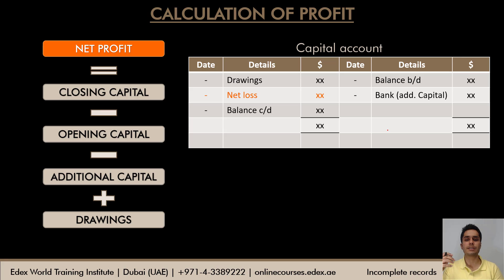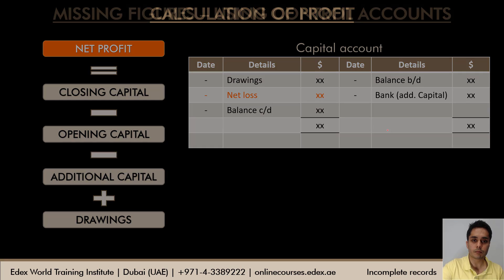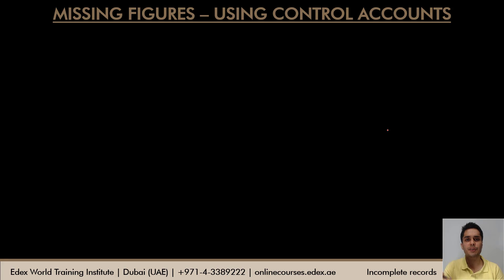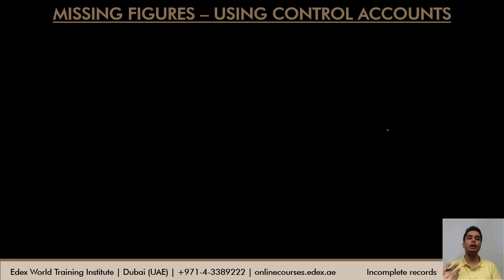Apart from calculating profit using opening and closing capital, if a proprietor maintaining incomplete records also wants to prepare an income statement to calculate gross profit and net profit, they need sales, purchases, and inventory details. If we can arrive at the sales and purchases figures, we can prepare the income statement.